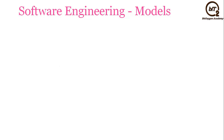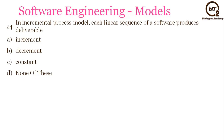The next question is: in incremental process model, each linear sequence of a software produces — deliverable increment, decrement, constant, or none of the above? It is straightforward in the incremental model — it will be increment. Answer will be A.